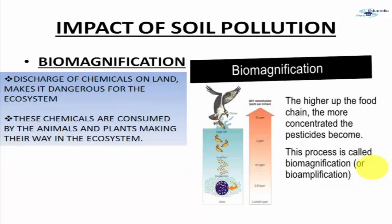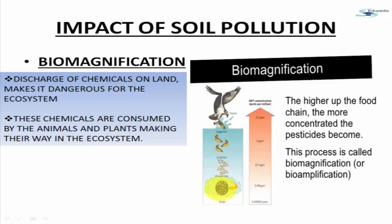Next is bio-magnification — the transfer of harmful chemicals from one body to another. In a food chain from smallest to largest organism, the primary producer is consumed by zooplankton, zooplankton are eaten by small fish, small fish are eaten by large fish, and then by a tertiary consumer like an eagle. The harmful chemicals initially present in the water are transferred all the way up to the tertiary level. This is bio-magnification — the discharge of chemicals on land makes it dangerous for the entire ecosystem.